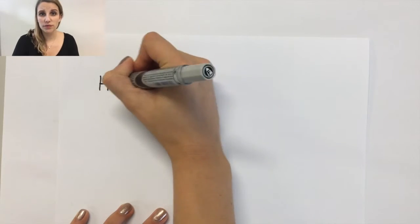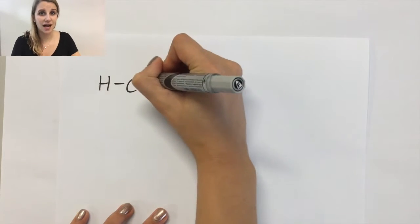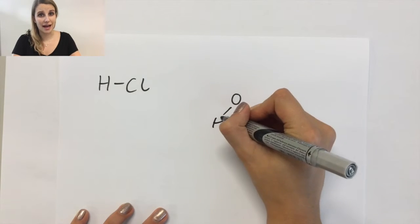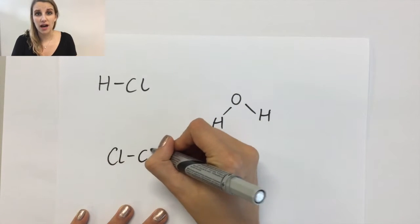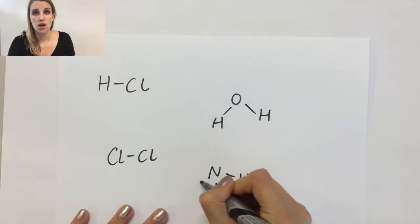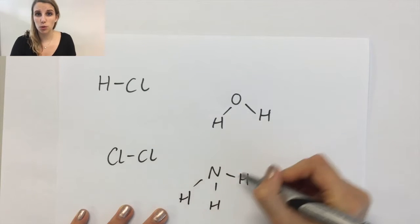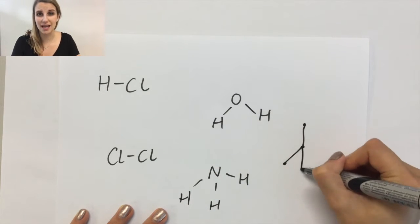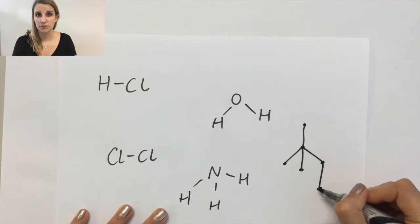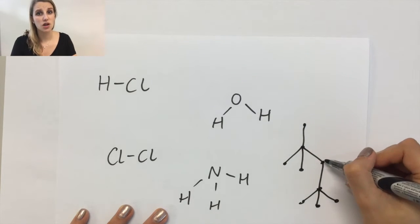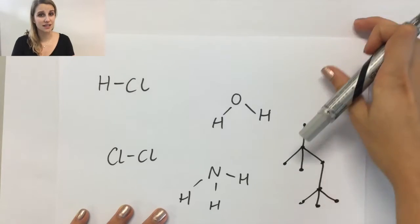If we look at covalent compounds, all of these compounds have electrons, so they do fulfill that one category. What they don't have is electrons that are free to move. It's really important that the electrons are free to move, and in all of these cases they are not. Therefore, all covalent substances do not conduct electricity.